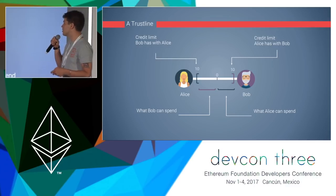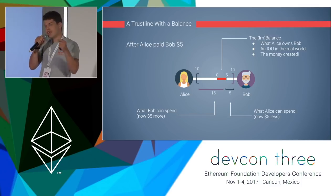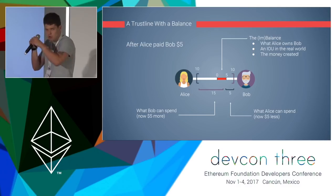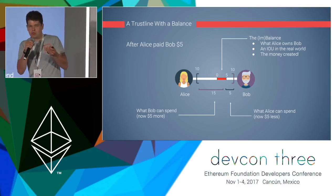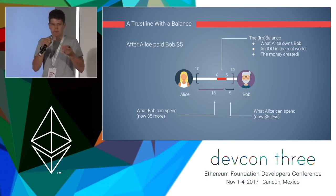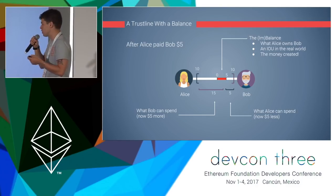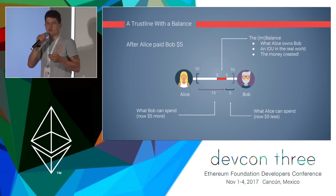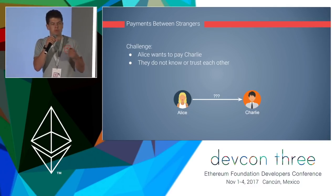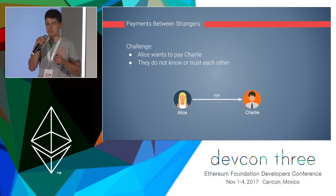Suppose Alice and Bob are good friends and Alice wants to pay Bob. She spends five of her $10 credit line, creating an imbalance between Alice and Bob. This IOU that Alice issues Bob is then money — something of value exchanged for the IOU. This is good for Bob because he knows and trusts Alice and has given her this credit line. It's totally pointless to use cryptocurrency for this because people do this all the time, like at a bar when a friend covers you.